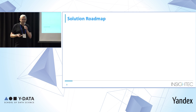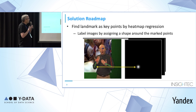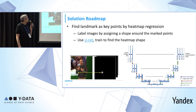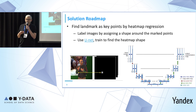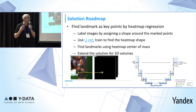I tried to find the landmarks as keypoints using heatmap regression. In this method, we create label images with a shape around the target point — for example, if we want to find a person's elbow, we create a label with a circle around the elbow location. I used U-Net, a very well-known and strong tool for segmentation, but instead of training it for segmentation, I trained it to find the heatmap shapes of the label images. To find the landmarks, we get the label image and find the center of mass. We also need a solution for 3D volumes, since we don't know the location in all three dimensions.